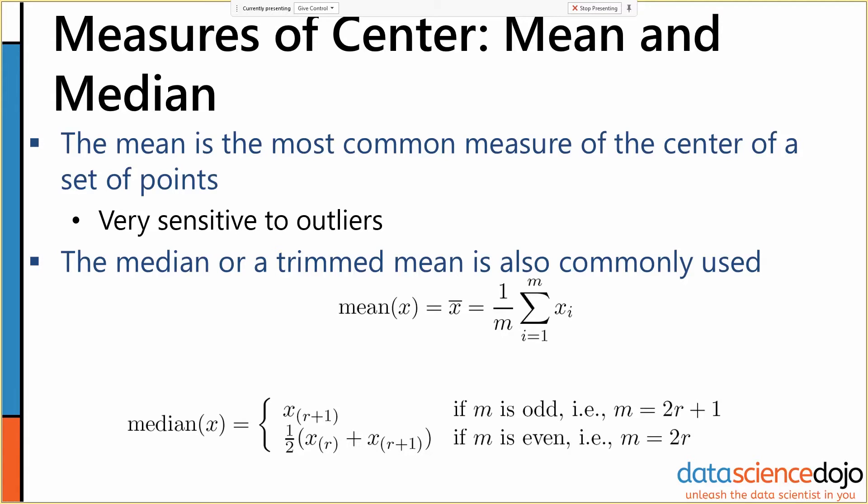Medians tell you exactly where your center is. If you really want to know what the exact middle of your data is such that 50 percent of people are below it and 50 percent are above it, median is great. It's basically immune to outliers.